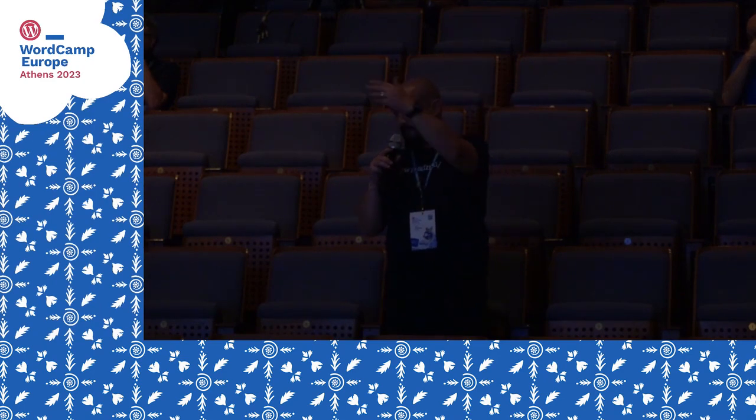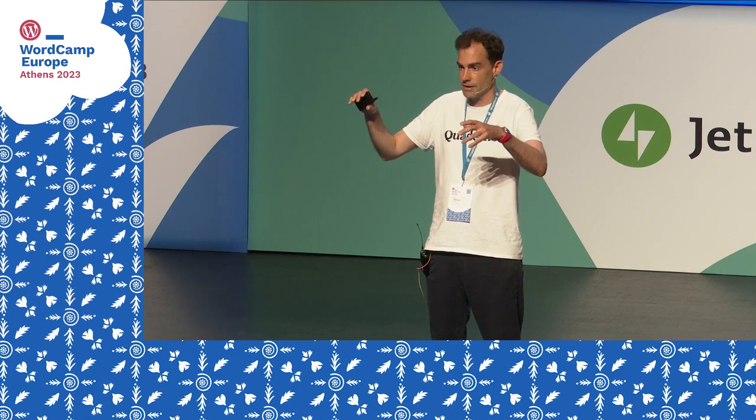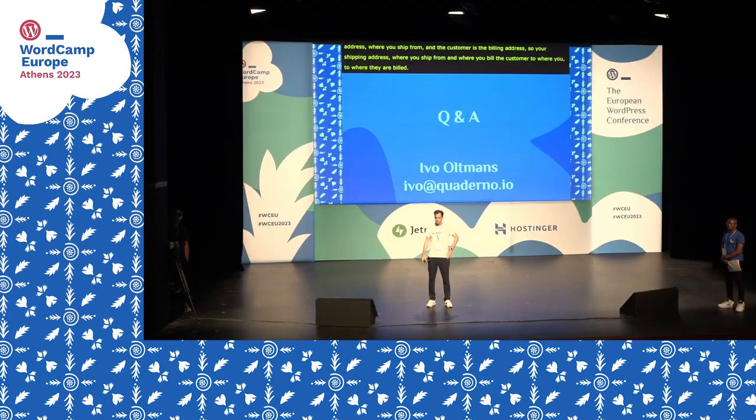Hi Ivo, thank you. We are neighbors — I'm from Portugal, you're from Spain. My question is about selling physical goods in the EU regarding the location for tax purposes. You mentioned the billing address, but I've heard from tax advisors it's the shipping address. For instance, if I have a shop in Portugal and someone buys from Spain but wants delivery in France, where is the tax collected? You take into account both addresses — you calculate based on where your business is based and the shipping origin, and then the customer's billing address.